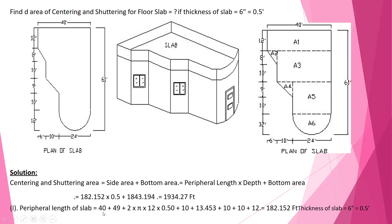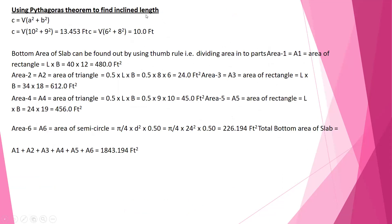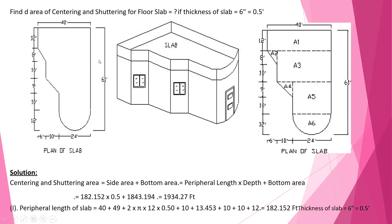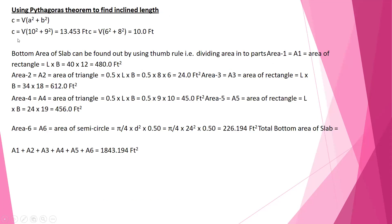Peripheral length of the slab is 40 plus 49, plus 2 into pi into 12 into 0.5 (6 inches), plus 10 plus 13.453 plus 10 plus 10 plus 10 plus 12 — that is 182.152 feet. Slab thickness is 6 inches. Using Pythagoras theorem, the inclined length C equals square root of A squared plus B squared. C equals square root of 10 squared plus 9 squared equals 13.453 feet; and square root of 6 squared plus 8 squared equals 10 feet.